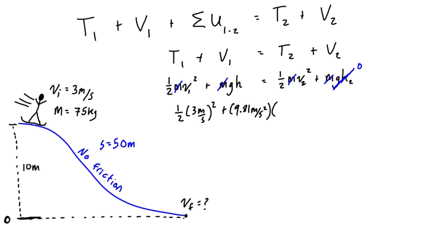And then on the right-hand side we just had left over what we had for kinetic energy 2. So we just have one-half times v2 squared. V2 is the unknown that we're looking for.